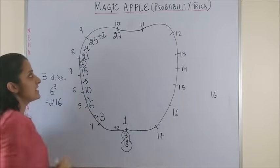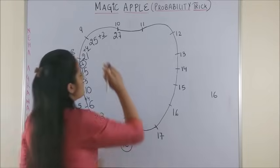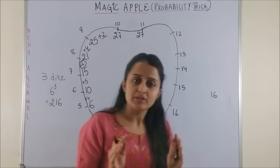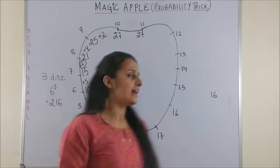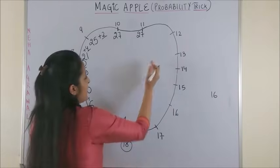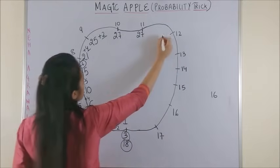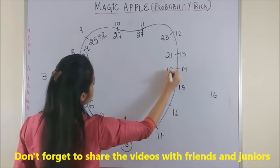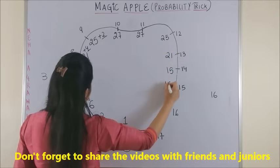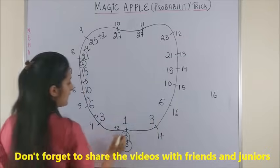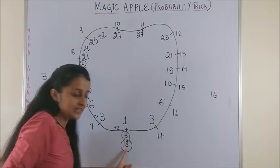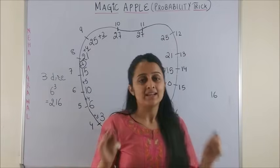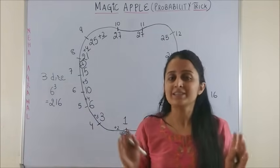So everything else follows a pattern except for this, but you can always remember it as 2 and 4 add up to give us 6. Now, once you've reached 27, realize that 11 will also have the favorable outcomes to be 27. Having done that, the right side is just a replica of the left. Now you start reducing and complete the Magic Apple: 25, 21, 15, next 10, 6, 3, and back to 1.